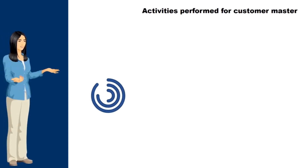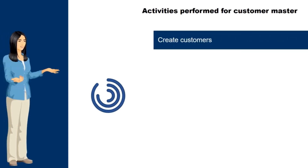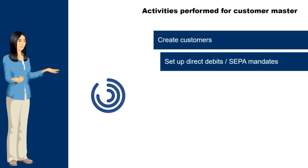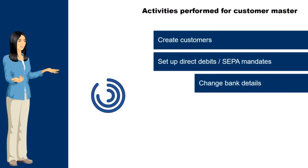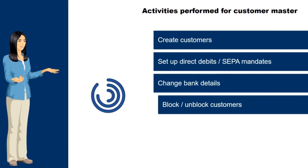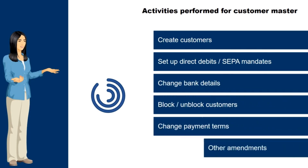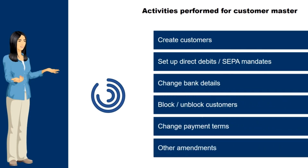Examples of activities performed for customer master are: create customers, set up direct debits or SEPA mandates, change bank details, block or unblock customers, change payment terms, and other amendments.